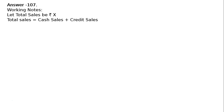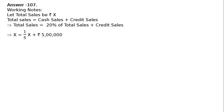Total sales equals cash sales plus credit sales. Since cash sales is 20 percent of total sales, we write 20 percent of total sales plus credit sales. Let total sales be x, so cash sales will be one-fifth of x, plus credit sales of rupees 5 lakhs.